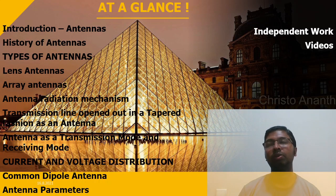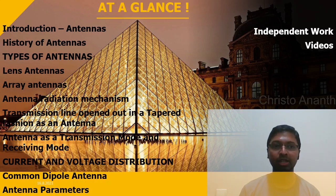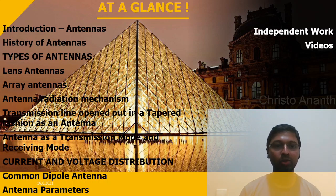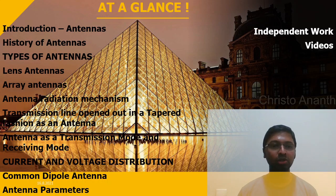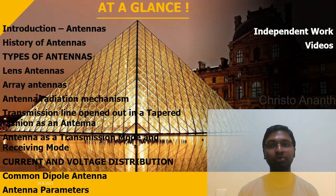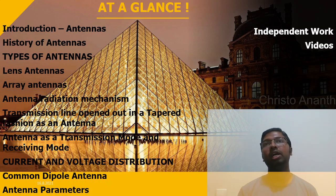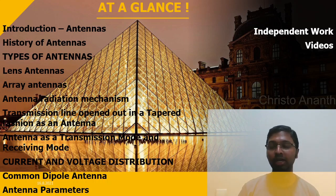In this class we'll have a short introduction towards antennas, a history of antennas, the various types of antennas, lens antennas, array antennas, and the mechanism of antenna radiation. We'll see how a transmission line offered in a tapered fashion behaves as an antenna. We'll understand antenna in transmission mode and receiving mode, current and voltage distribution, the common dipole antenna, and antenna parameters. Short videos will be provided at regular intervals, and please complete the equivalent work in the hemisphere as soon as possible.